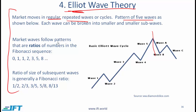Market waves follow patterns that are ratios of numbers in the Fibonacci sequence. In the Fibonacci sequence you have 0, 1, 1, and then every number is the sum of the previous two numbers — so 3 is the sum of 2 and 1, and 5 is the sum of 3 and 2. We can use ratios such as 1/2, 2/3, 3/5, and 5/8 to predict the size of subsequent waves, which is useful for a technical analyst.